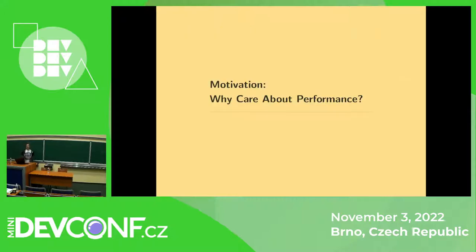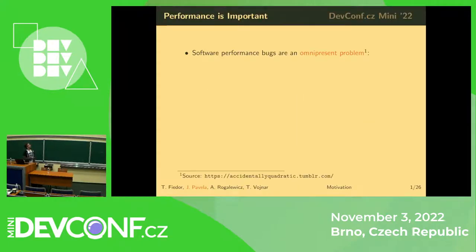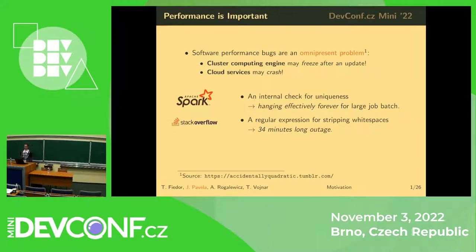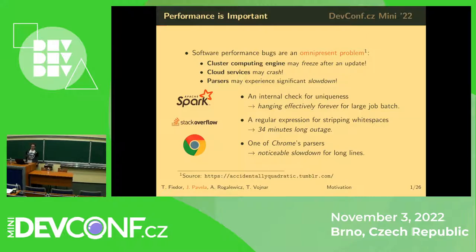Let me start with some brief motivation on why you should care about your software's performance. Software performance bugs are an omnipresent problem — they exist in pretty much every software. Some horror story examples: your favorite cluster computing engine might freeze just after an update, which actually happened for Apache Spark. Or maybe you've heard about the famous outage of Stack Overflow, which was caused by a performance issue and cost more than half an hour of downtime — a lot of money.